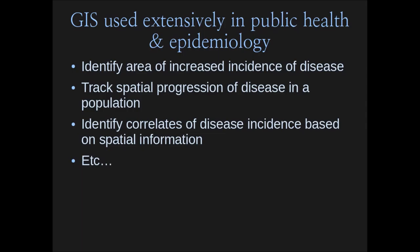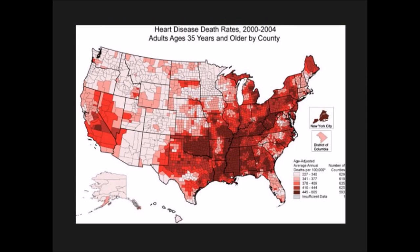As I mentioned, GIS and epidemiology were kind of born together and it's still used a lot in public health. We can identify areas of increased incidence of disease, predict where a disease might spread next, track the spatial progression of a disease in a population, and identify correlates of disease based on spatial information — bringing together lots of data sources to make predictive answers.